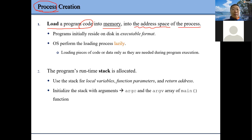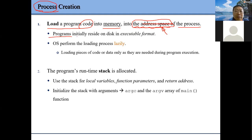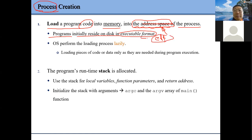When the loader loads this program to make it a process, it will follow this compiled address space and load the program into the corresponding location. The program is initially in an executable format — one common one is ELF, which stands for Executable and Linkable Format. This is a widely used format. Following this format, we will load our program.